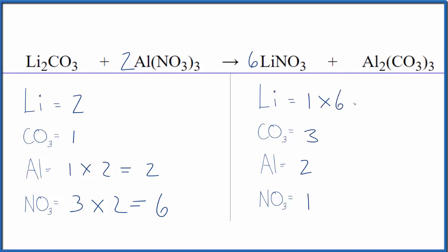One times six, that'll give us six lithiums. Six times the nitrate, so six times one, that'll give us six nitrates. The nitrates are balanced.